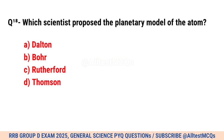Question No. 18. Which scientist proposed the planetary model of the atom? Correct option is C. Rutherford.